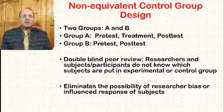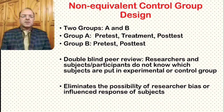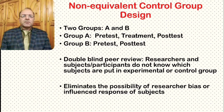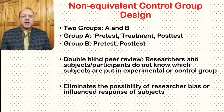The double-blind procedure is intended to eliminate the possibility of researcher bias or influenced responses from subjects. In summary, if there is a difference in outcomes between the experimental group and the control group, those outcomes may be attributed to the treatment.